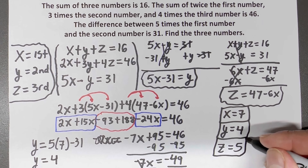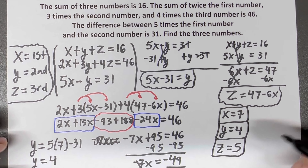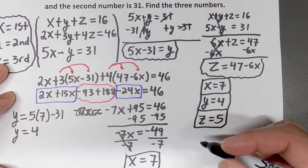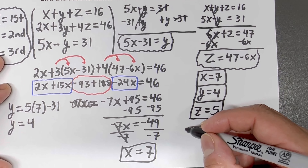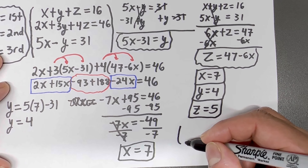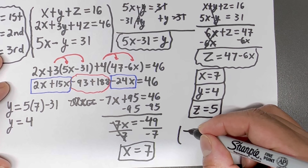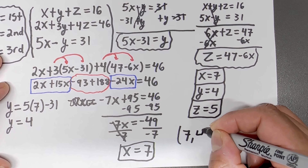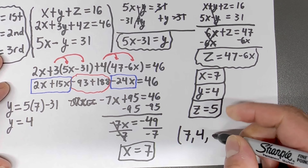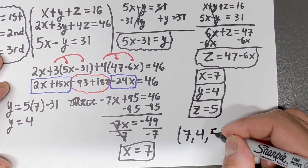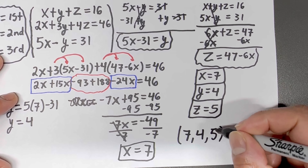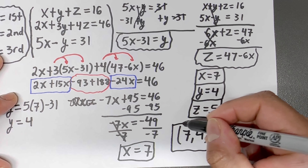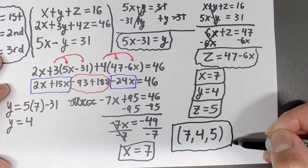All we have to do now is write the answer as an ordered triple. The solution is (7, 4, 5), and that is the final answer.